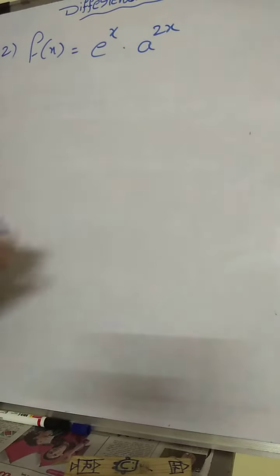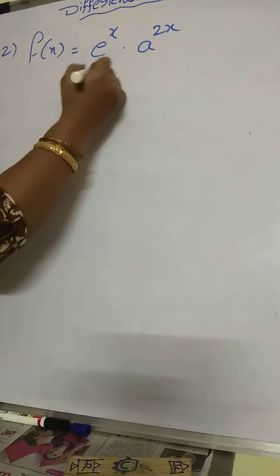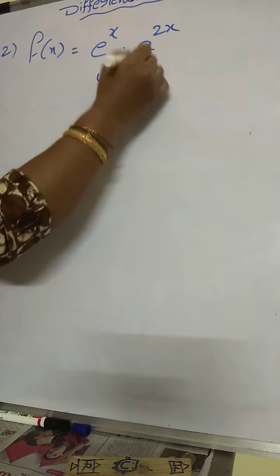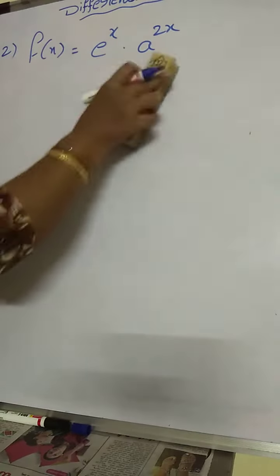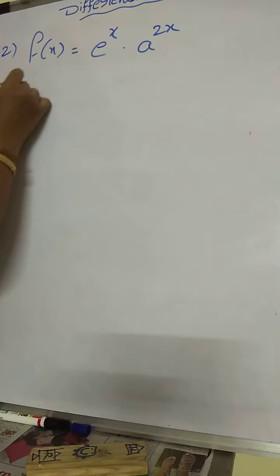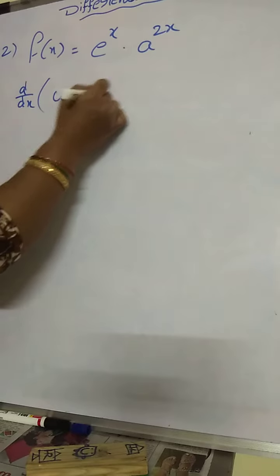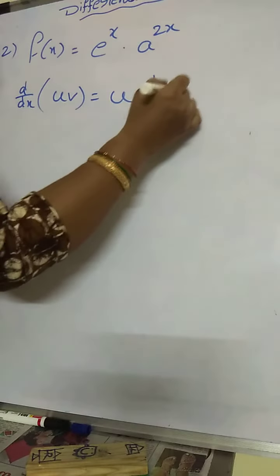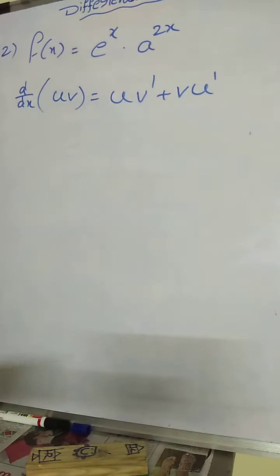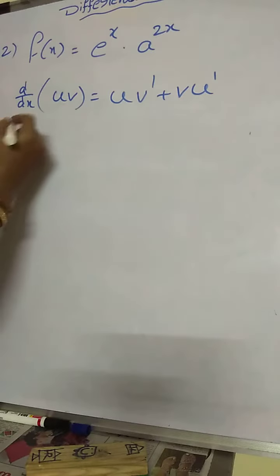Then see formula here. Two variables are there. Then use uv formula. Then you should take here u and v. Use that formula. d by dx of uv. What is the formula? Just I am writing right here. d by dx of uv equal to u into v dash plus v into u dash.